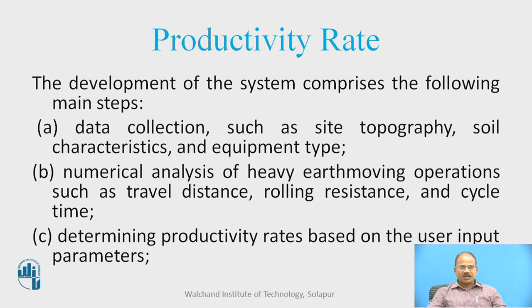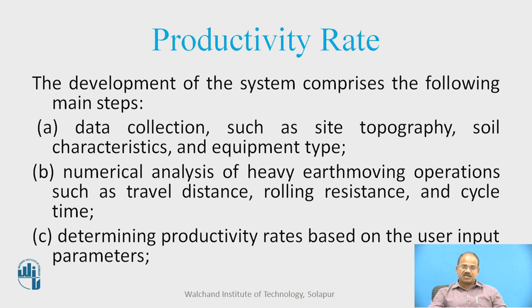The productivity rate comprises the following main steps. For data collection at any site, you need to know the site topography, the soil characteristics that the earth moving equipment will handle, and which equipment is being employed on site. The numerical analysis includes travel distance for hauling, rolling resistance of the manoeuvring system — whether wheel-mounted or otherwise — and most importantly, the cycle time.